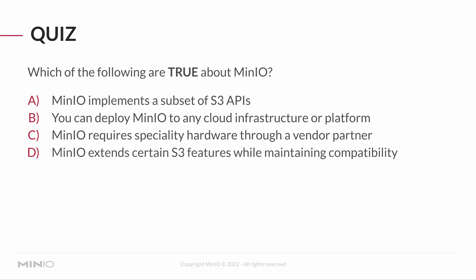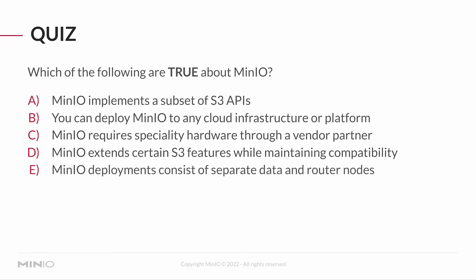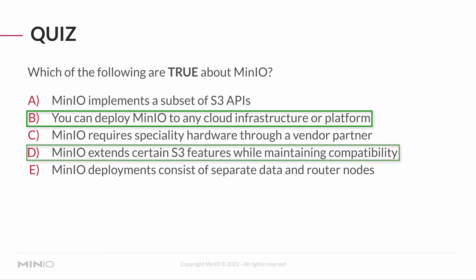D) MinIO extends certain S3 features while maintaining compatibility. Or E) MinIO deployments consist of separate data and router nodes. The answers for this one are B and D. You can deploy MinIO to any cloud infrastructure or platform — you can deploy it to AWS, Google Cloud, Azure, or DigitalOcean.